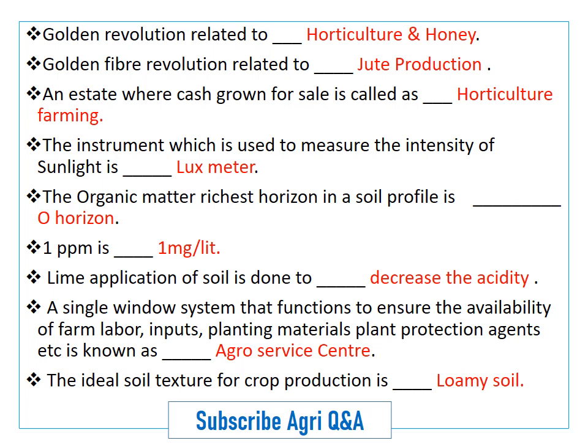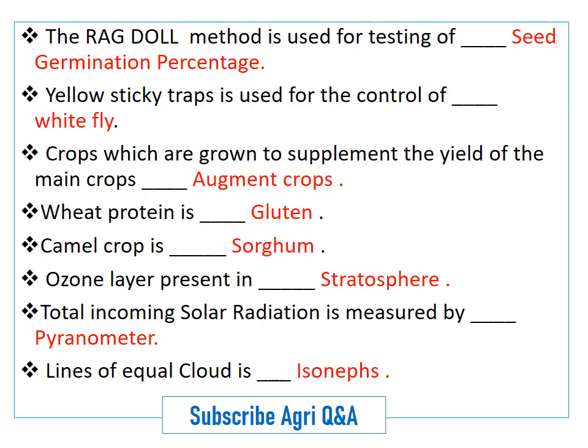The ideal soil texture for crop production is loamy soils. The ragdoll method is used for testing seed germination percentage. Yellow sticky traps are used for the control of whitefly. Crops which are grown to supplement the yield of the main crops are called augment crops.